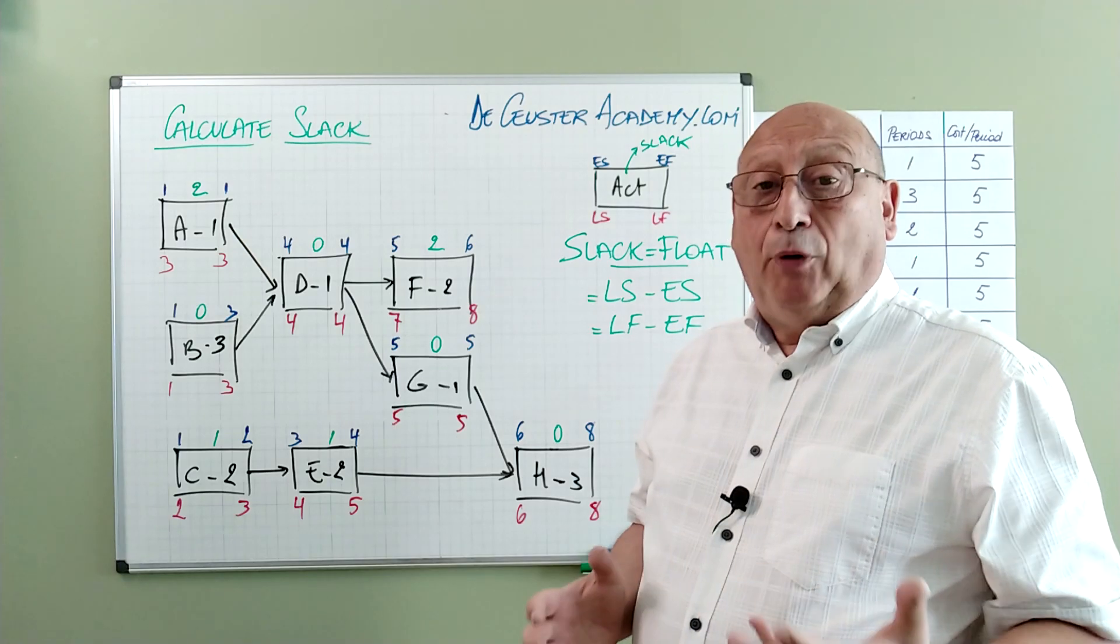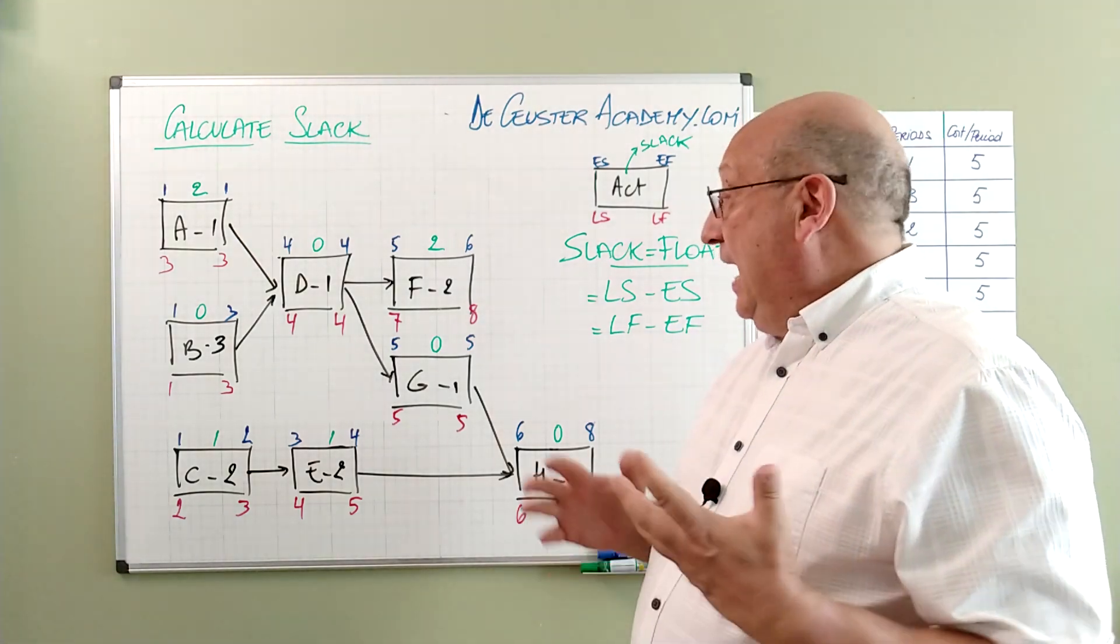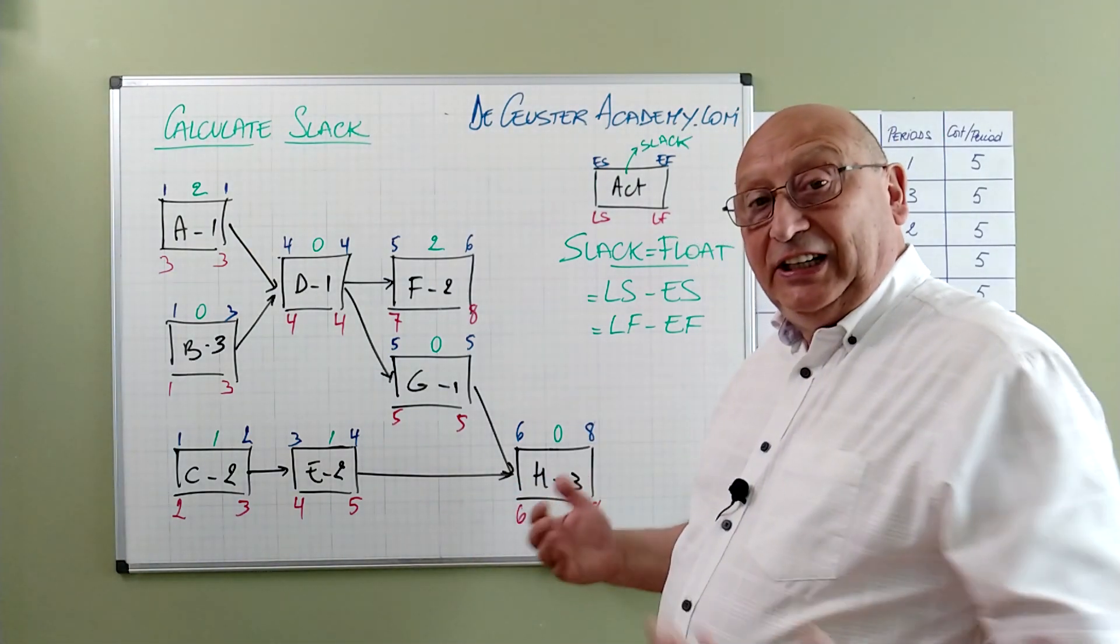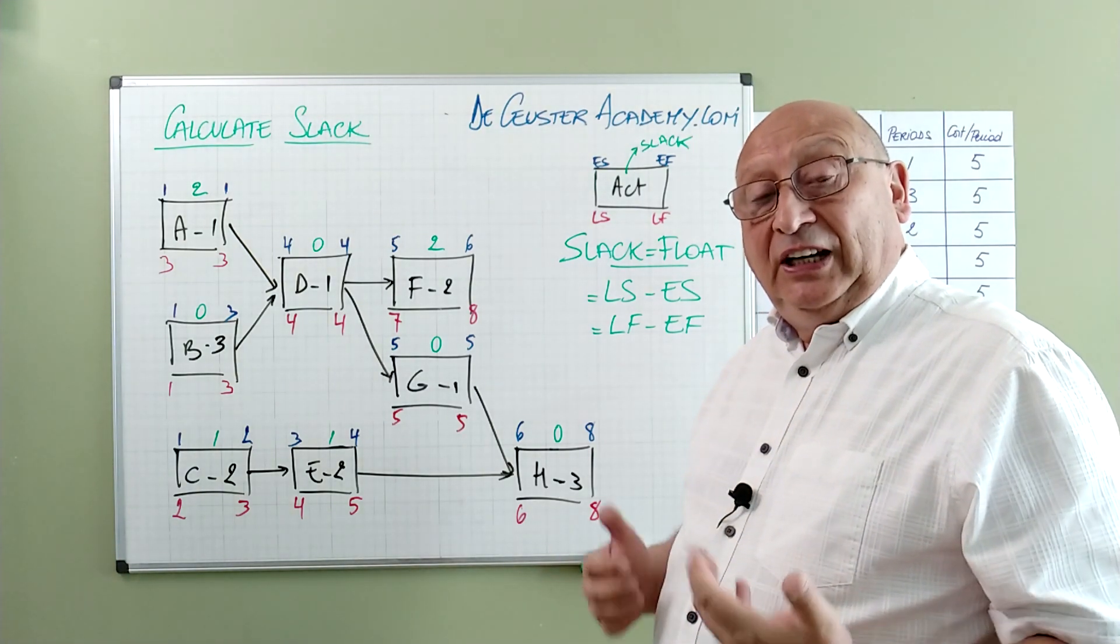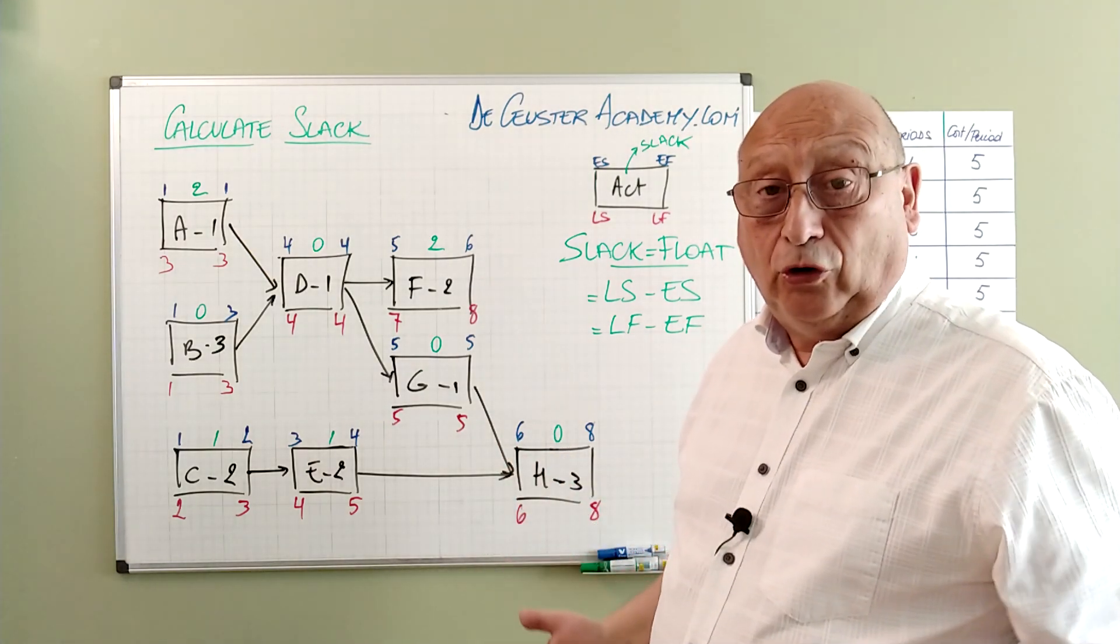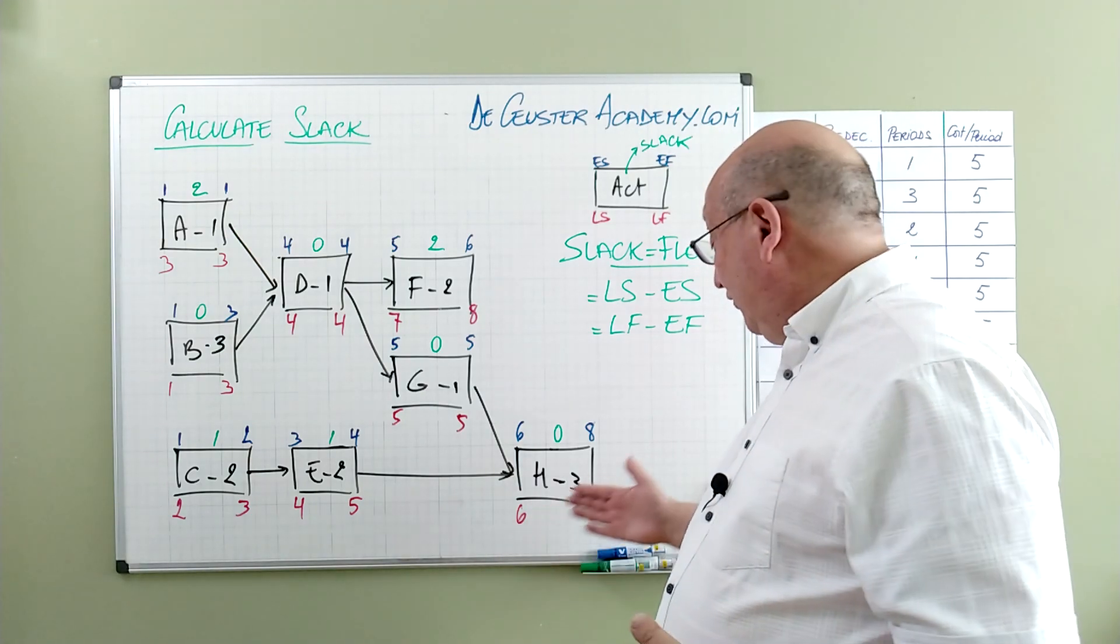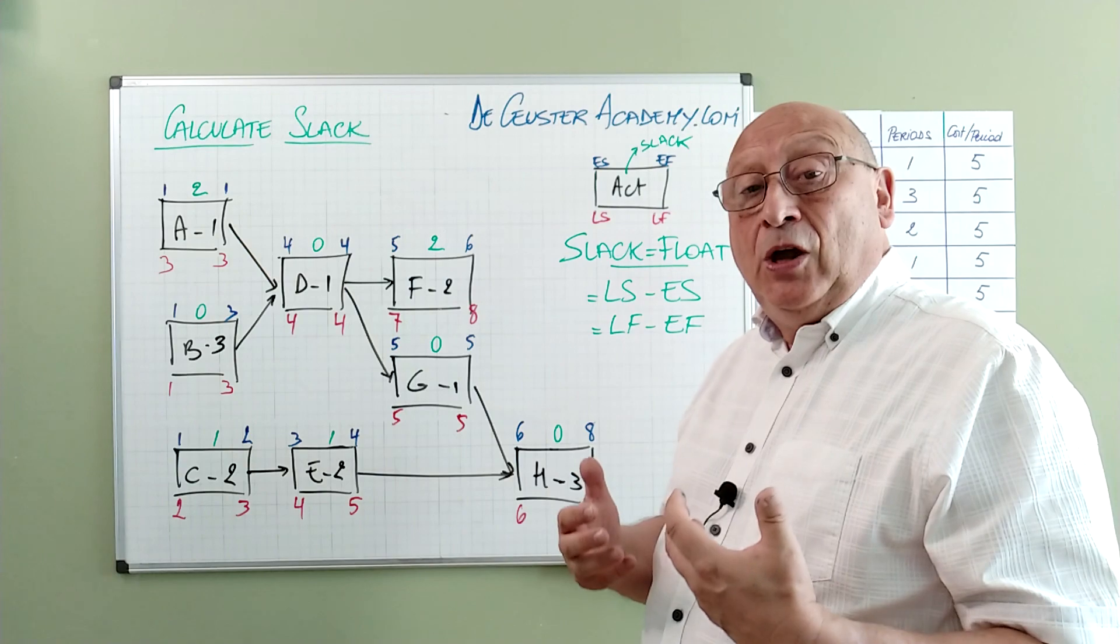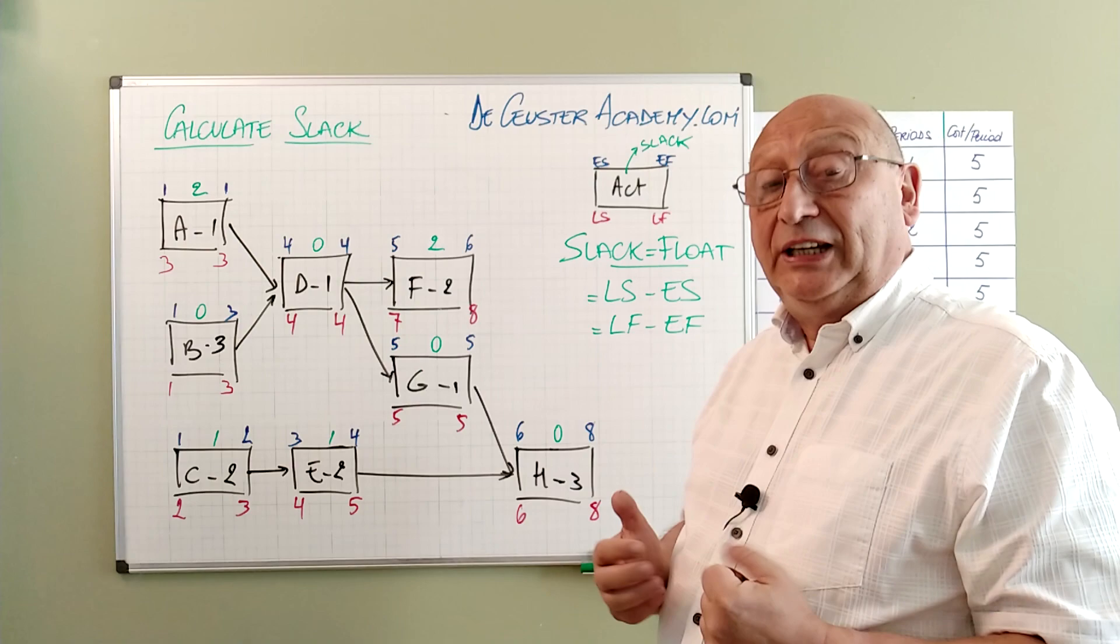Now what is the importance of the slack? Basically we have to see what's happening. And let's look at one of those critical path activities. Let's take the last one. It's the easiest one. What happens when our activity starts later than 6, or early start or late start? They're the same. When it starts later we will see that the duration of the project or the end date of the project will be postponed. It has an impact on the duration of the project.